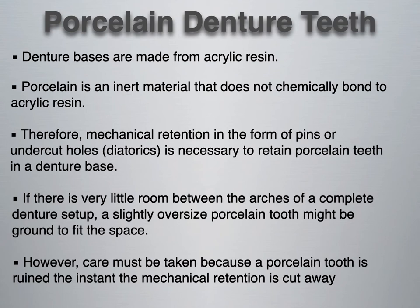Denture bases are made from acrylic resins — the pink portion of a denture is acrylic plastic. Porcelain is an inert material that does not chemically bond to the acrylic resin base. Therefore, mechanical retention in the form of pins or undercut holes — also known as diatorics — are necessary to retain porcelain denture teeth in the denture base. In comparison, when using a plastic or acrylic resin tooth, the tooth chemically bonds to the acrylic base, which is why the industry has geared toward fabricating aesthetic acrylic teeth.